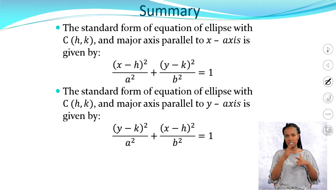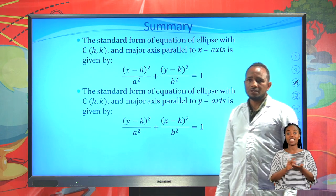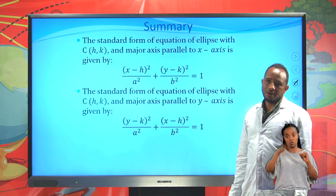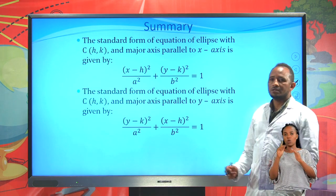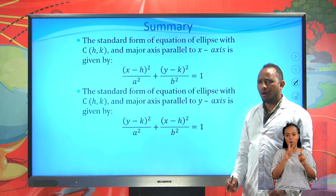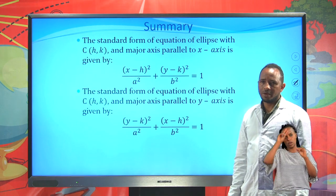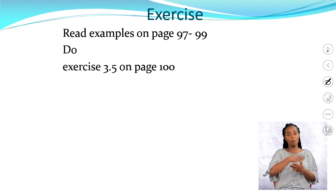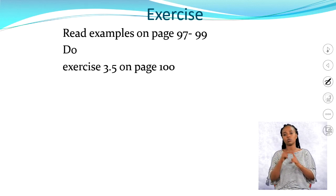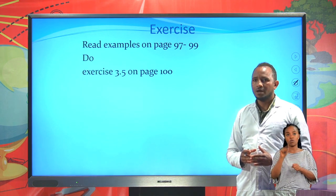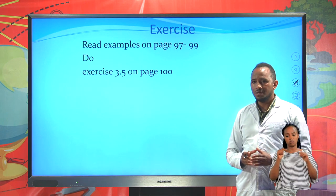This is all about today's lesson. The standard form of the equation of an ellipse with center (h, k) and major axis parallel to the x-axis is: (x − h)² / a² + (y − k)² / b² = 1. When the major axis is parallel to the y-axis: (y − k)² / a² + (x − h)² / b² = 1. Please read examples on pages 97 to 99 and try exercise 3.5 on page 100. Until next time, goodbye.